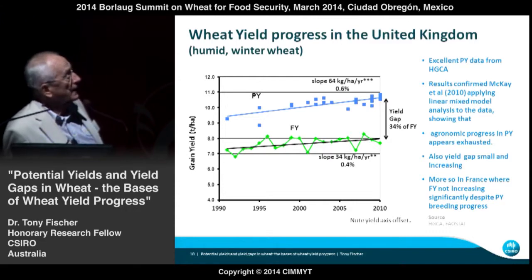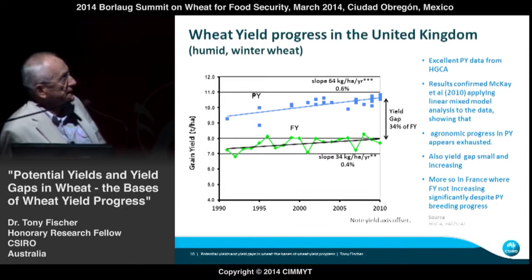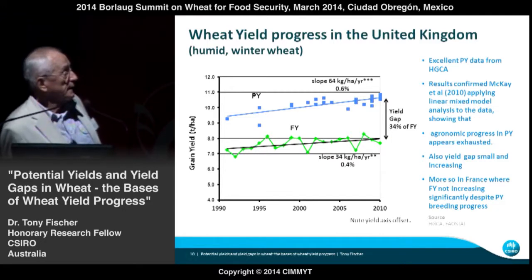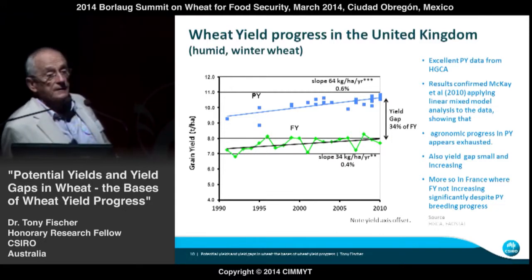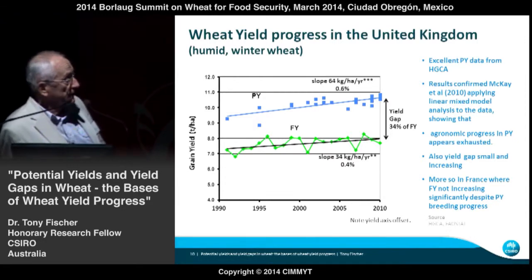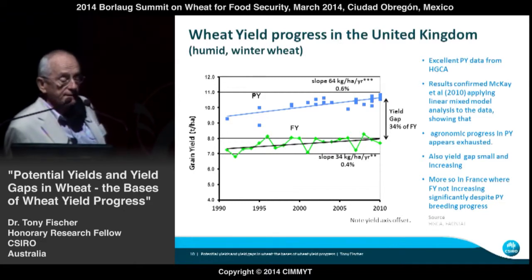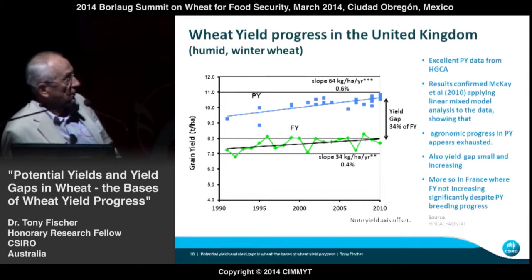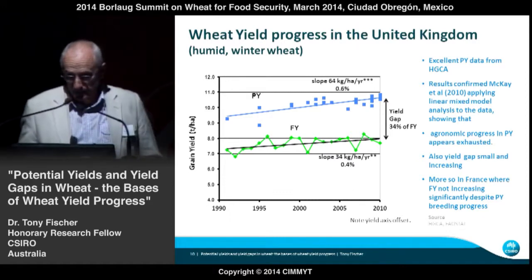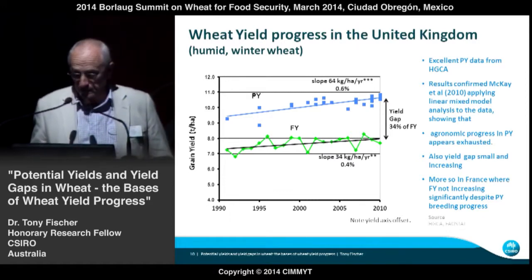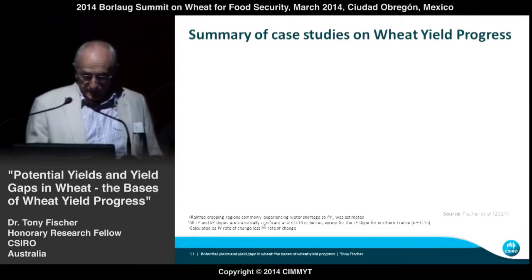We seem to be running out of agronomic progress at the level of potential yield in the UK. The yield gap is very small but is actually increasing. In France it's much more obvious — farm yield is not increasing at all, yet breeders are continuing to make almost 1% progress in winter wheat in northern France. Among other things, European regulations on input use are holding back yield in France and several other European countries.